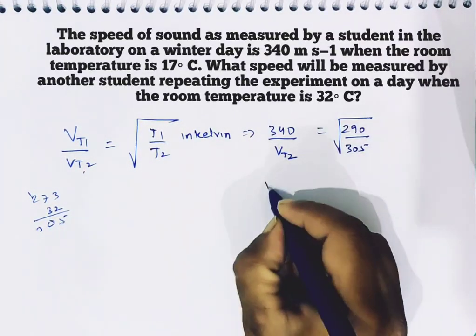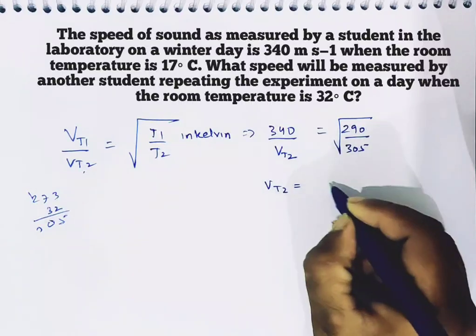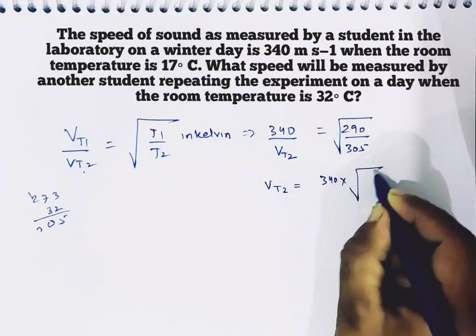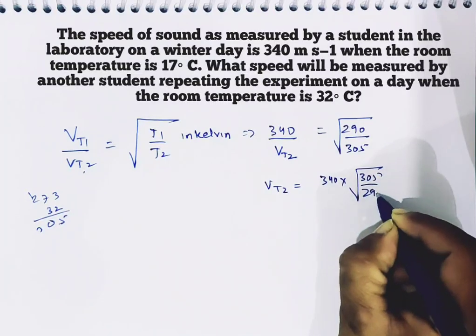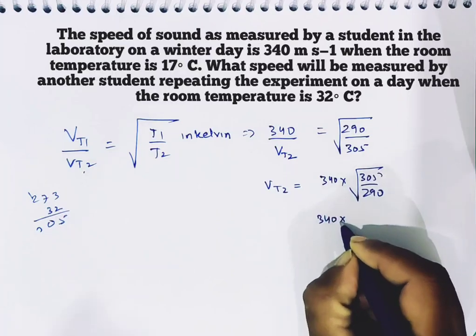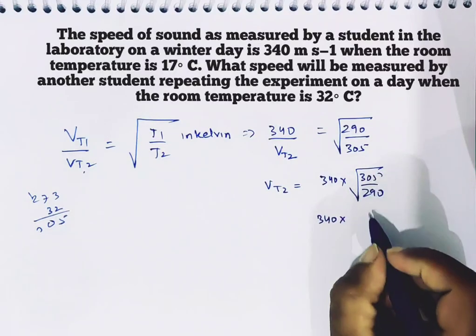So v(T2) at 305 Kelvin equals 340 times the square root of 305 over 290. Whatever this comes out to be...